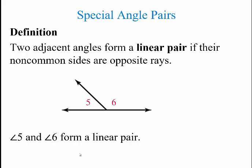Two adjacent angles form a linear pair if their non-common sides are opposite rays. For example, angles 5 and 6 here form a linear pair because angle 5 has its vertex here with this ray, and angle 6 is with this ray over here — angles 5 and 6 are opposite each other, and thus they form a linear pair.